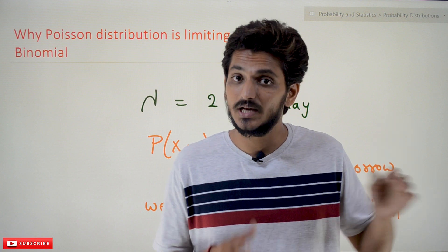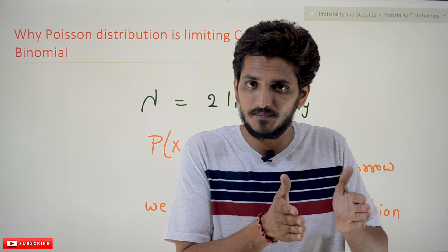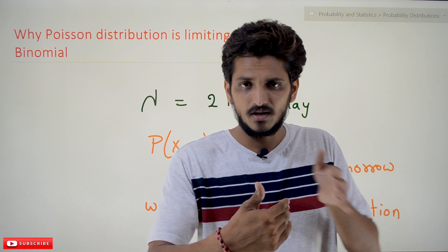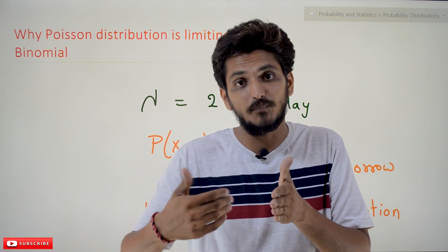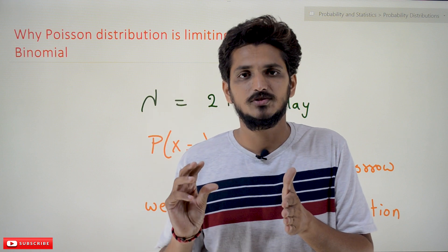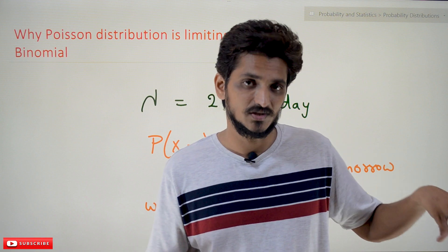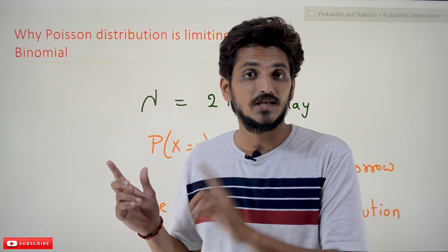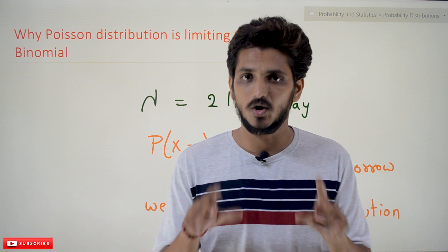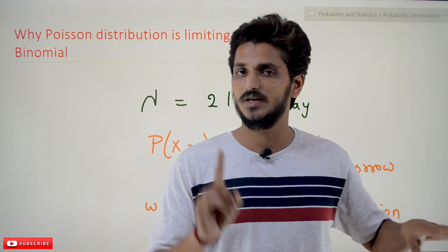In our previous classes, we clearly discussed about binomial distribution data analysis example. Based on that example, we understood the concept of Poisson's distribution. After that, we discussed how we got the probability mass function for Poisson's distribution using binomial distribution. This is a continuation class, so please watch our three previous classes and come back here. Our assumption is you already have that intuition about what we discussed previously.